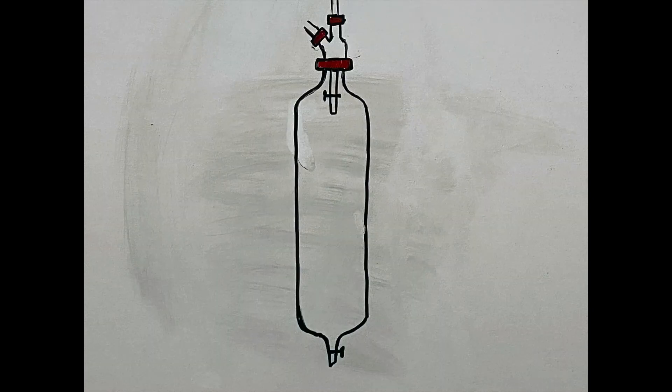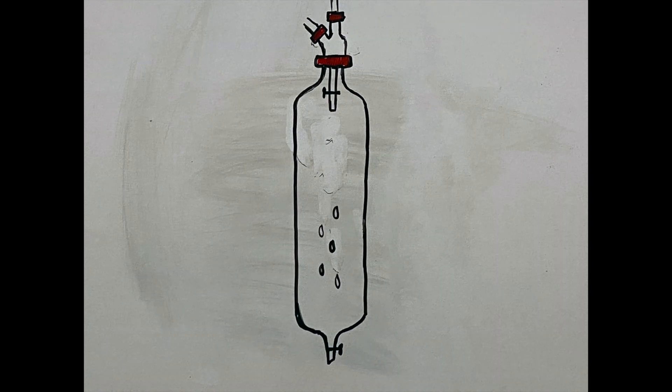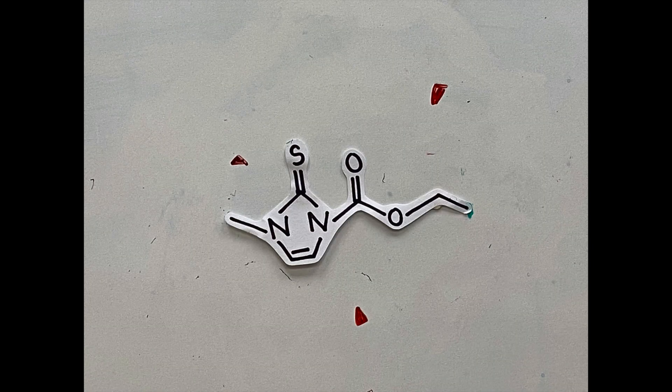Lastly, the white solid is purified by column chromatography with ethyl acetate and petroleum ether to produce prodrug carbamazole.